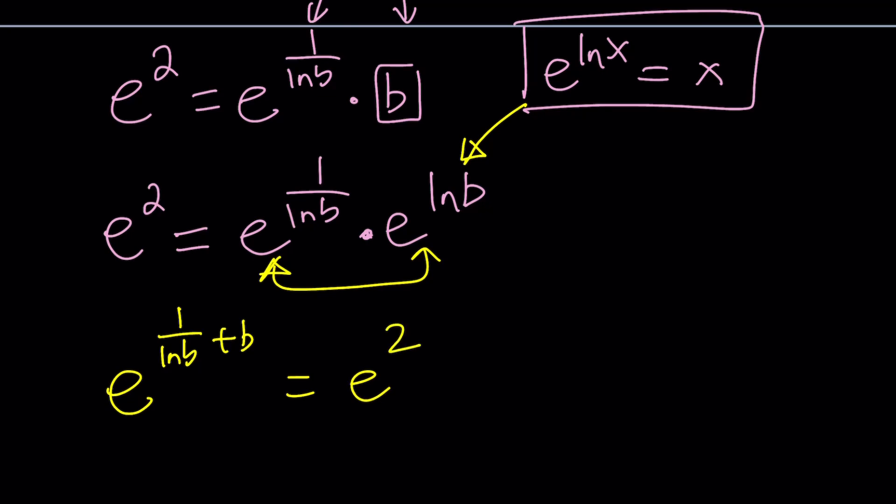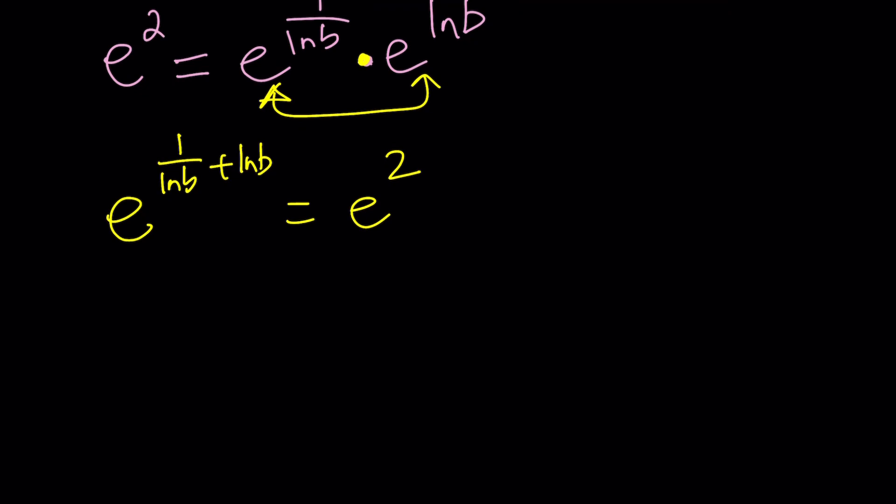And from here, I forgot to write it as ln b, not just b. We added the exponents because they are being multiplied, and that equals e to the second power, which means we can now go ahead and equate the exponents. So this means I can set ln b plus 1 over ln b equal to 2, and then from here, solve for ln b, and eventually solve for b, and then plug it in to solve for a. A lot of work, but that's basically what it is.